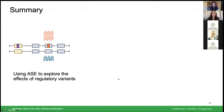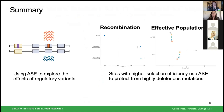To summarize: ASE is a useful tool to explore the effects of regulatory variants. I showed how I've used this to explore selection and how it impacts gene expression and regulatory variation. Specifically, recombination and effective population size — two attributes important for the efficiency of selection — are impacting the action of ASE. Sites with higher selection efficiency use ASE to protect from highly deleterious mutations, contributing to our understanding of how evolution is shaping our regulatory genome.